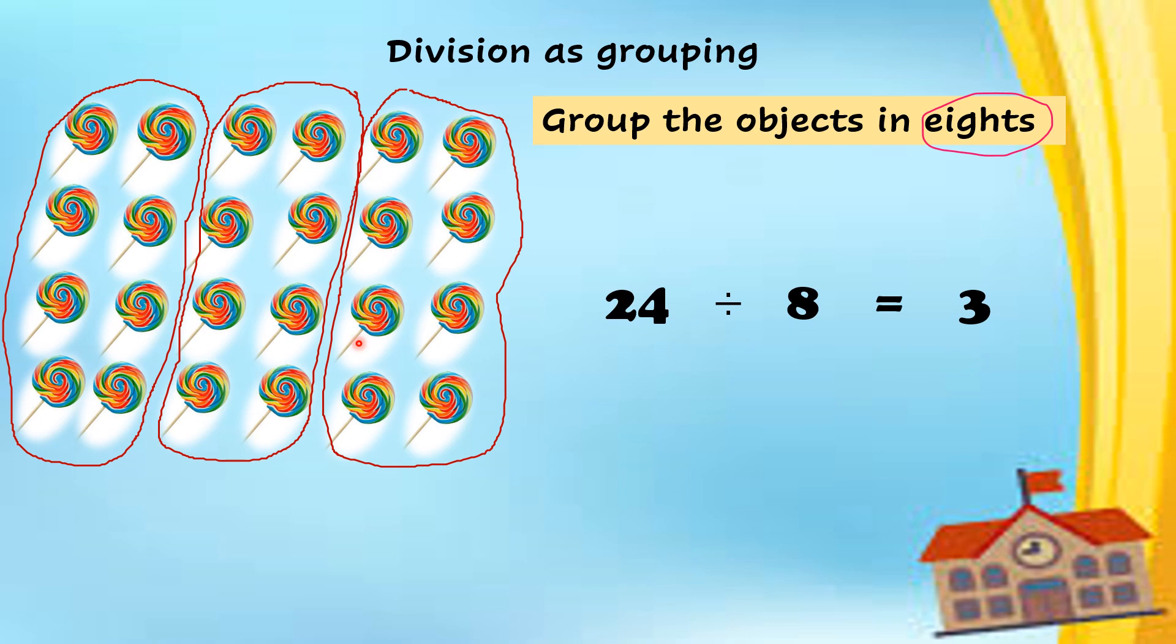So, I can write like this. 24, divide 8 equal 3. 24 is the total numbers of the lollipops. Jumlah semua lollipops. Tulis kat sini. 24, divide 8. This 8 because we group the lollipops in 8. Kita buat 8-8 dalam kumpulan.